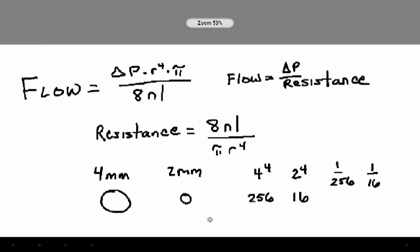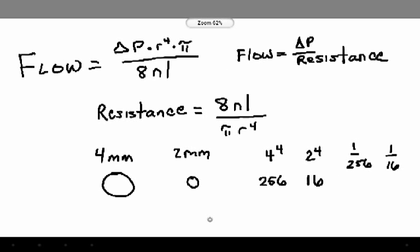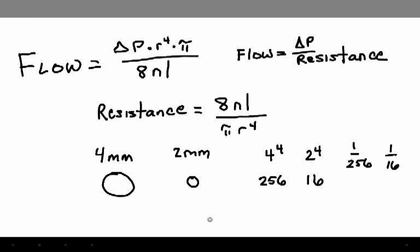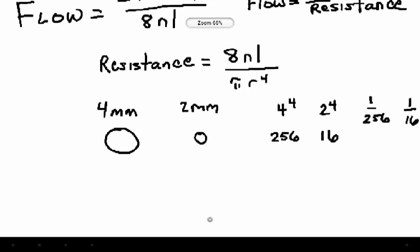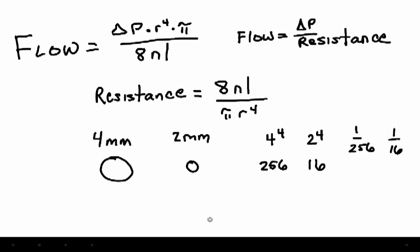What you also might want to consider when you are doing fluid resuscitation is to have a larger gauge catheter that is short in length. Why? Because length varies directly with resistance and radius is an inverse relationship to the fourth power to resistance.